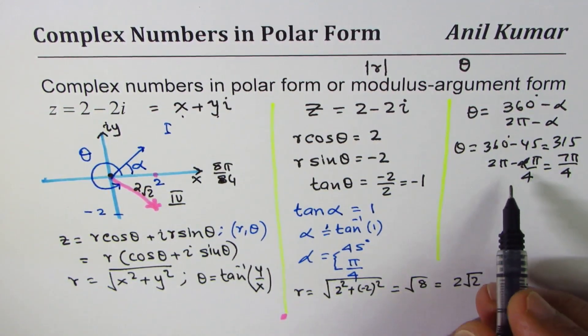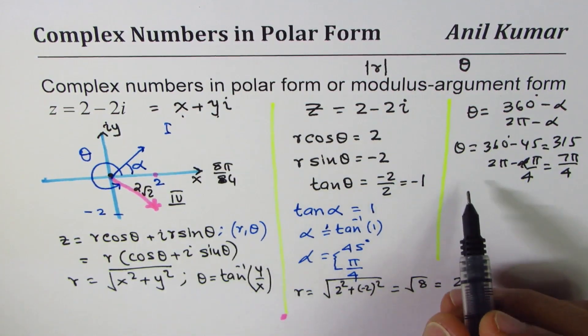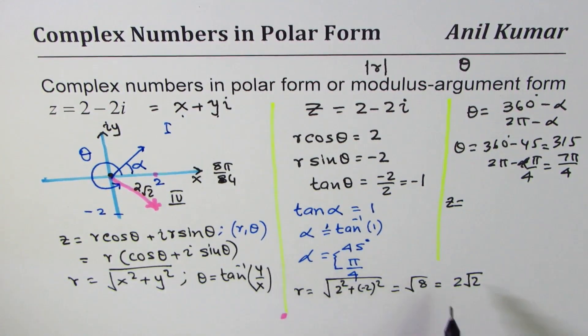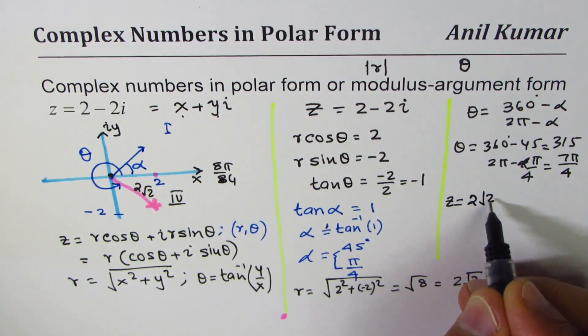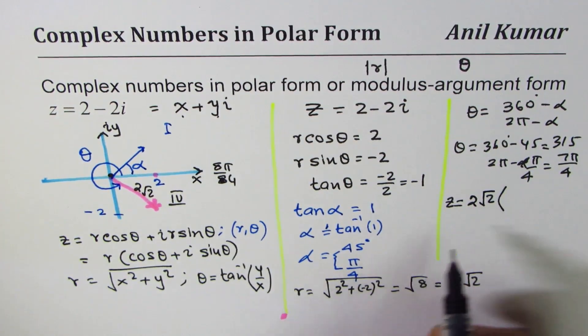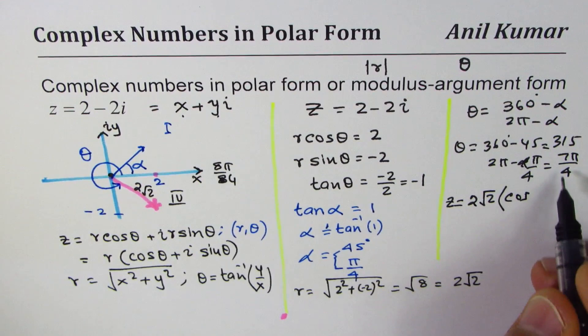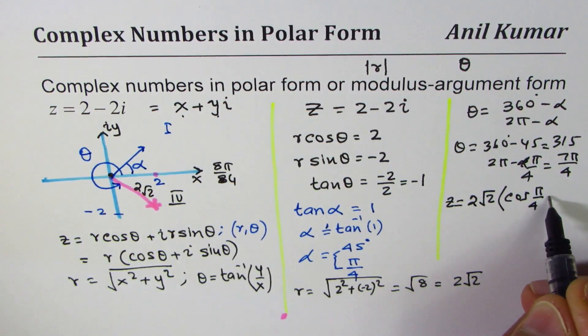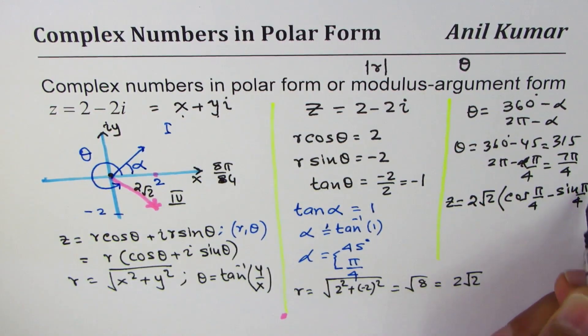2 square root 2 times cos of, I'll write pi by 4 and explain you later, minus sine pi by 4. So I chose to use theta as equals to minus pi by 4, that is clockwise.